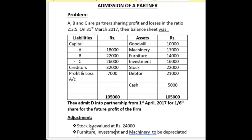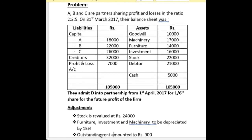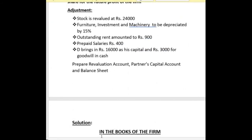Now look at the adjustments. Stock is revaluated at Rs. 24,000. Previous balance of stock is 22,000, so it is increased by Rs. 2,000. Next, furniture, investment and machinery are to be depreciated by 15%, meaning their values are decreased by 15%. Outstanding rent amounted to Rs. 900 is a liability for the firm, so it increases liability and is shown in the debit side of revaluation account.